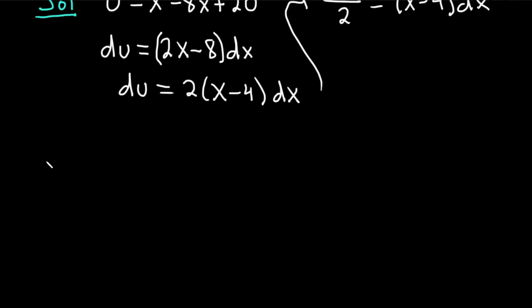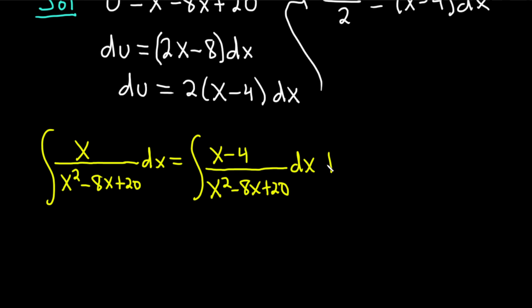So we have, I'm going to rewrite the original problem here, the integral of x over x squared minus 8x plus 20 dx. Now what we're going to do is write this by subtracting 4 and adding 4. This is the integral of x minus 4 over x squared minus 8x plus 20 dx, plus 4 over x squared minus 8x plus 20 dx.